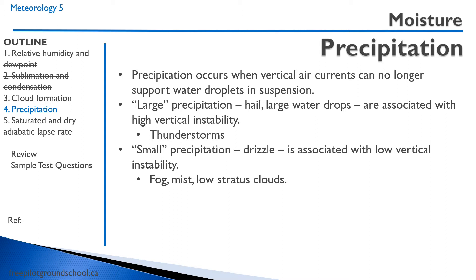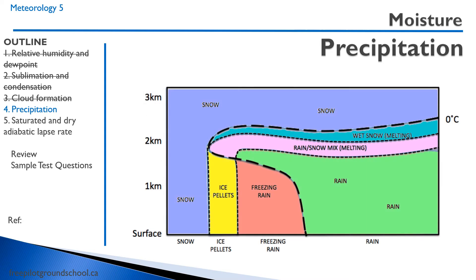Hail keeps building and getting blasted back into the top of a thunderstorm, creating more and more ice on it. Then you have small precipitation like drizzle, associated with low vertical instability from stratus clouds. You end up with fog, mist, and low stratus clouds — it's very stable, with no vertical updrafts to keep those water droplets in the air.